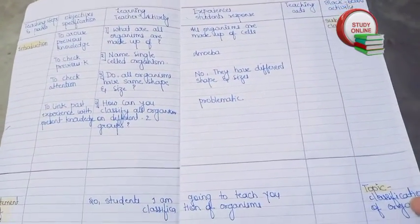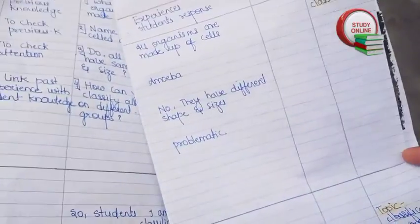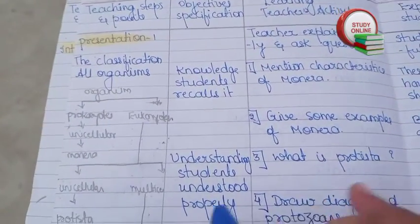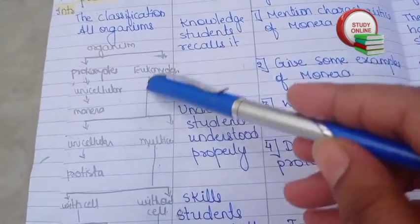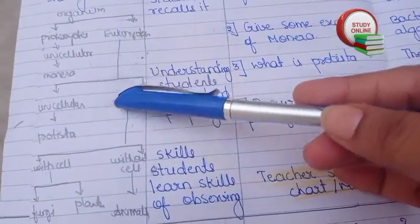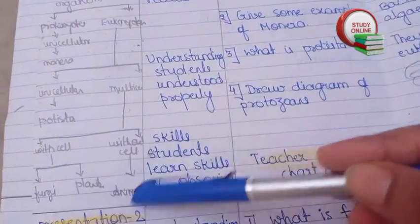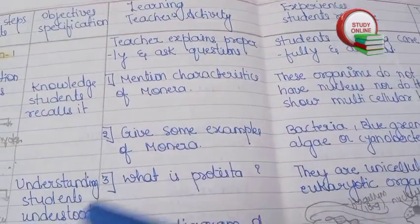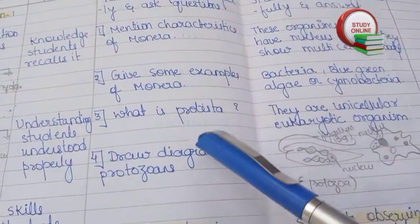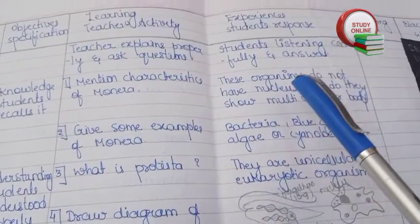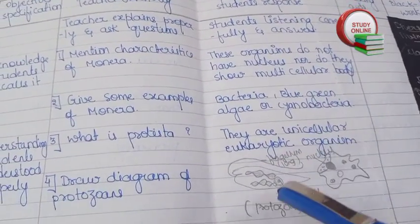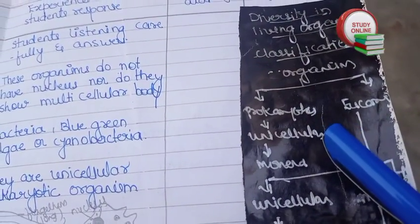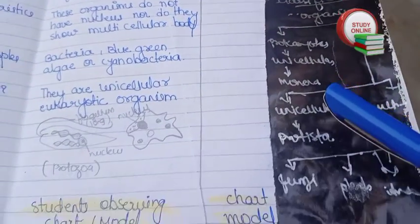Now here you can see the presentation. In the first part, you can see all three diagrams. After that, we have to ask related questions and here are the expected answers. And here is the blackboard work, which you can see very clearly.